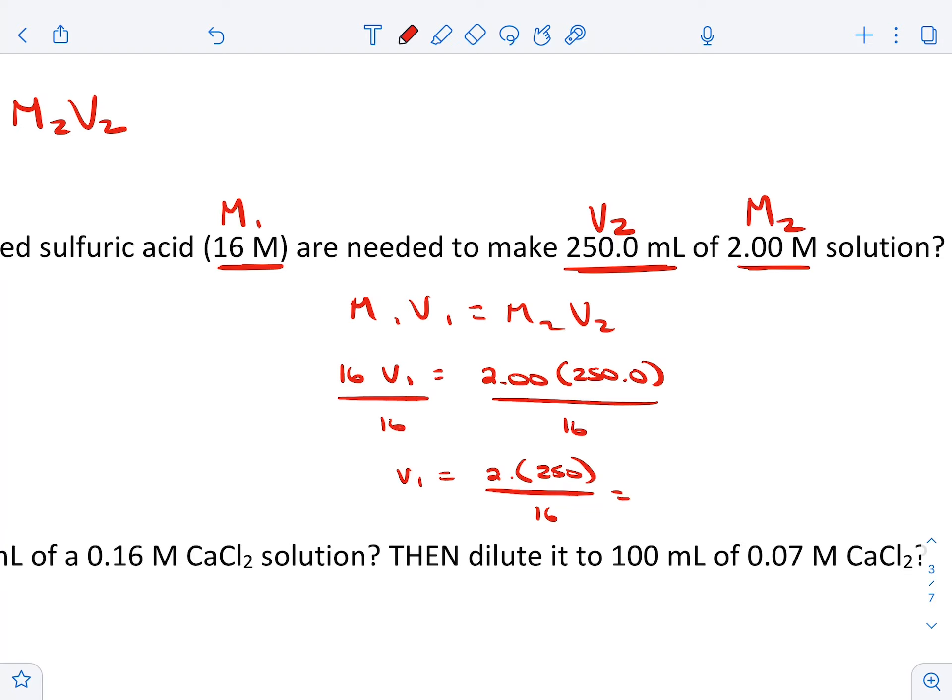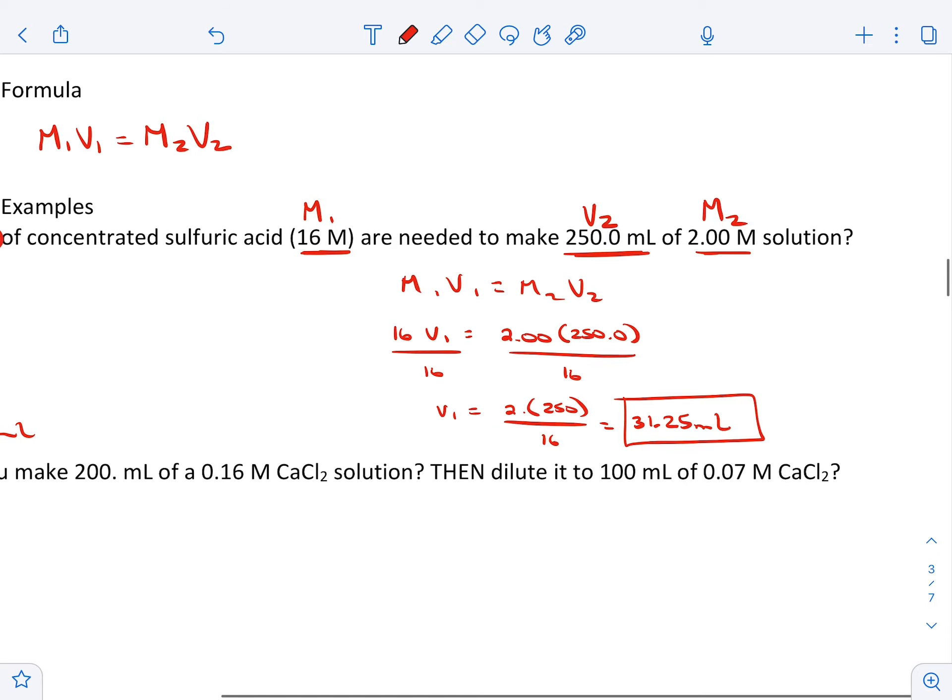So 2 times 250 is 500, and then we divide that by 16, we're going to get 31.25 milliliters of the concentrated sulfuric acid that we need to add there. It's an acid, we'll learn more about this later.